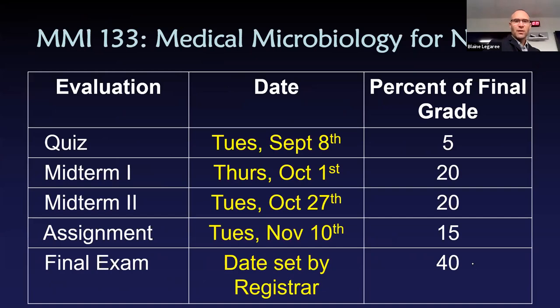I messed up a little bit on the course outline — I initially sent you a draft, so I apologize for that, but these are the correct evaluation dates. You have a quiz next Tuesday, one week from today. It's going to be mostly on Thursday's lecture material. It's mostly going to be a biology review quiz — a little bit of stuff from Biology 30 and Biology 20.